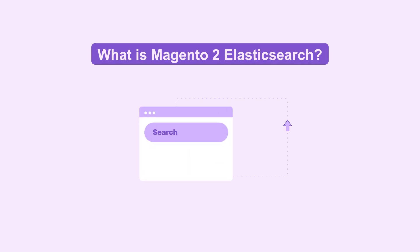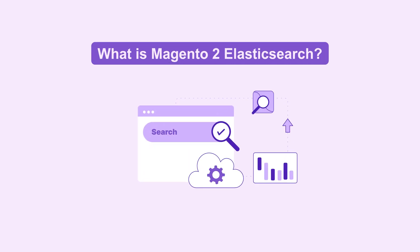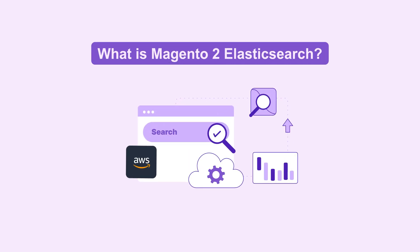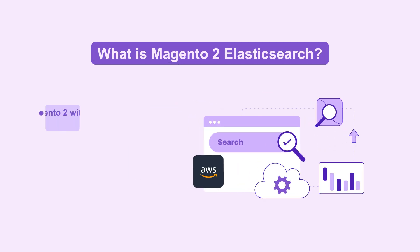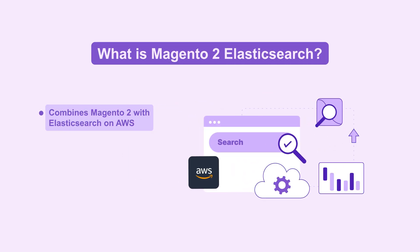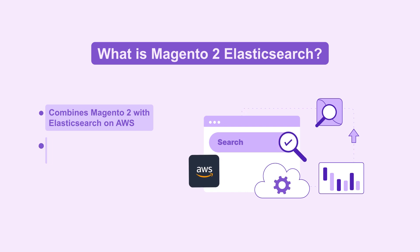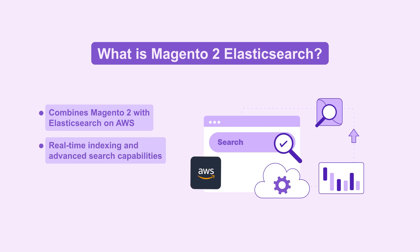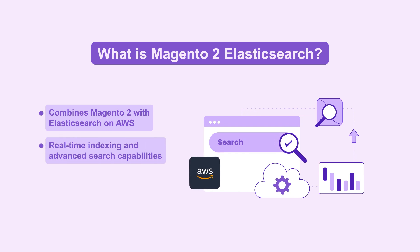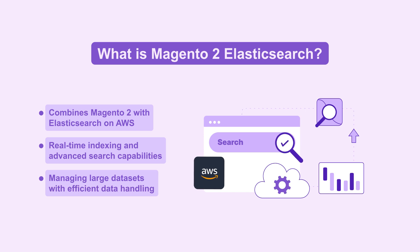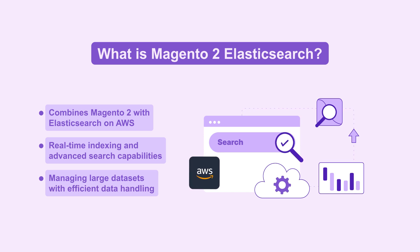Let's explore what Magento 2 AWS Elasticsearch is. It combines the power of Magento 2 with Elasticsearch on AWS, offers real-time indexing and advanced search capabilities, and is ideal for managing large data sets with efficient data handling and scalability.